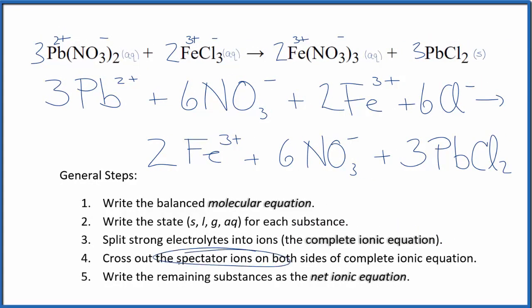Now we can cross the spectator ions out. They're on both sides of the complete ionic equation. So we have our reactants on the top, our products on the bottom. If I look, I see I have 6 nitrate ions here in the reactants, and again in the products. Those are spectator ions. We're going to cross those out.